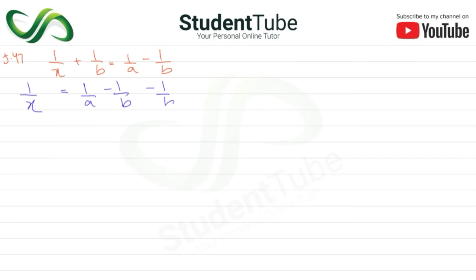Or -1/b, so 1/x equals 1/b. So b comes here. Now b minus minus becomes plus, so we have -2a/ab. We will do cross multiplication.